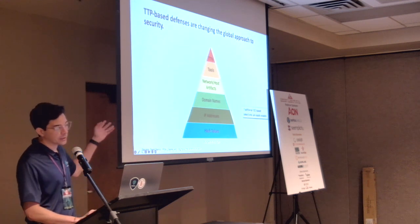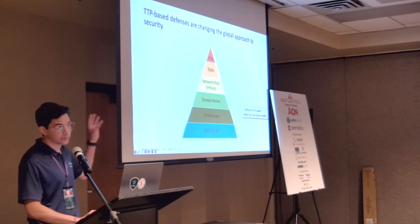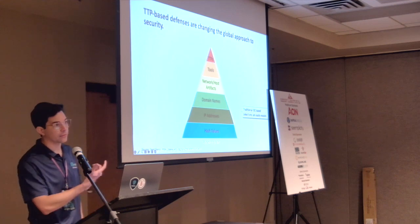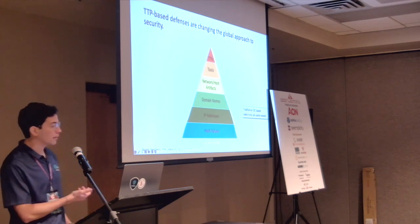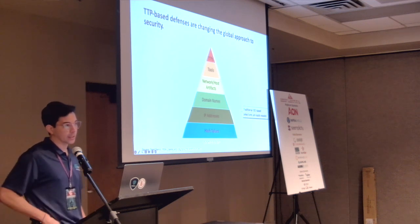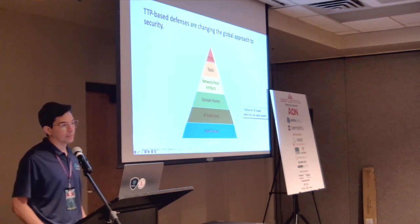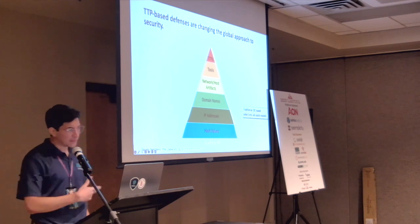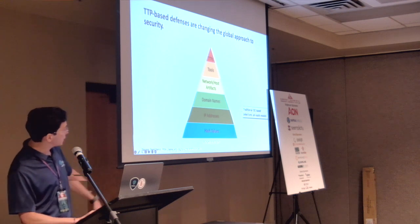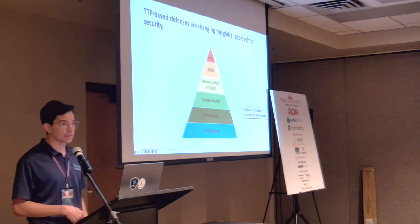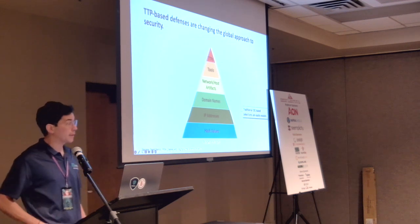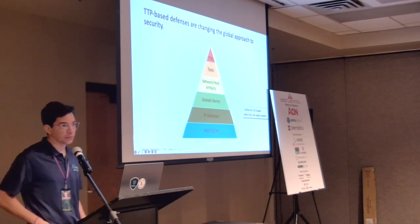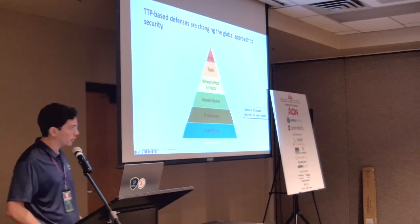That's basically the Pyramid of Pain. On the bottom, we have traditional IOCs — hash values and file hashes — which are simple but ephemeral. Adversaries can just swap one byte and make it harder to detect. The same goes for IP addresses and domain names — adversaries are really good at quickly changing infrastructure or using weird command-and-control channels. So it's really hard to just block those and say you've kicked out the adversary.